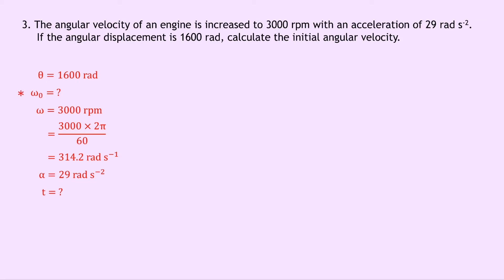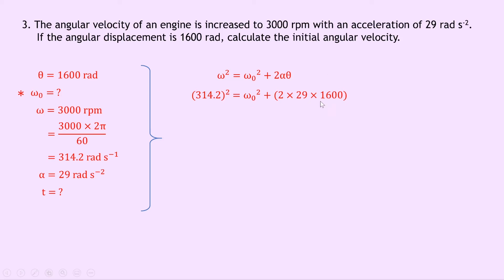Putting a star next to ω₀ — that's the one we're trying to find. Since we don't have the time, we're going to use the equation of motion which doesn't have t in it: ω² = ω₀² + 2αθ. Substituting in our numbers: 314.2 squared equals ω₀ squared plus 2 times 29 times 1,600. Working through the calculation gives us ω₀ squared equals 5,896. Taking the square root gives us ω₀ equals 76.8 radians per second.